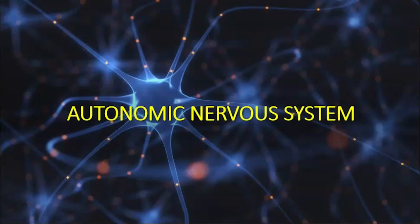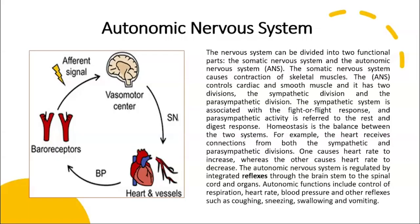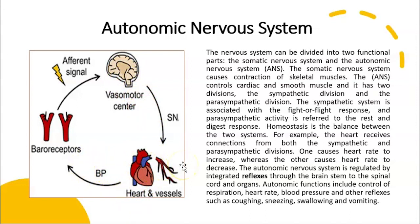The autonomic nervous system helps us control, for example, high blood pressure. When you have high blood pressure, you don't voluntarily or consciously reduce your blood pressure. That is done using reflexes controlled by the autonomic nervous system. An increase in blood pressure is captured by receptors in the blood vessels, that information is sent to your brainstem, and from there the heart rate is reduced in order to reduce the blood pressure. That's an example of a visceral reflex.